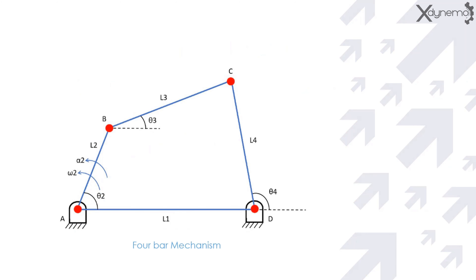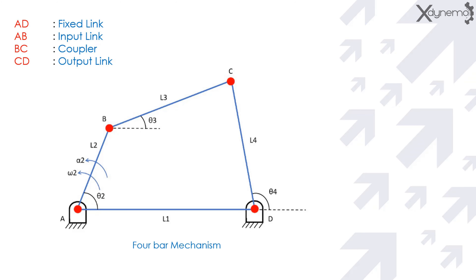A 4-bar mechanism is one of the simplest mechanisms. It involves 4 links connected by revolute joints. AD is the fixed link, AB is the input link, BC is the coupler link, and CD is the output link. Kinematic analysis involves position analysis, velocity analysis, and acceleration analysis.